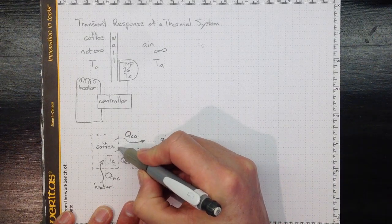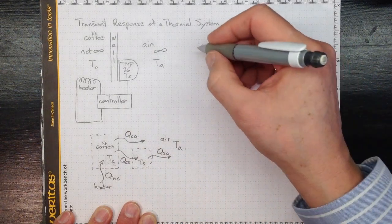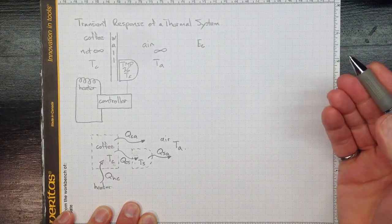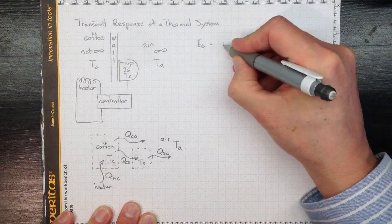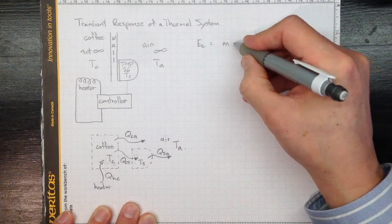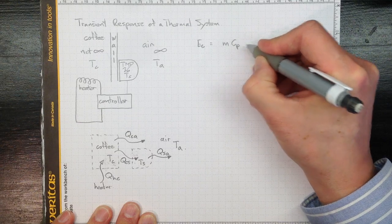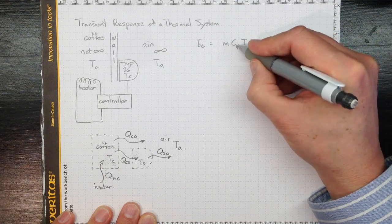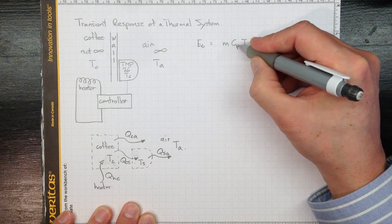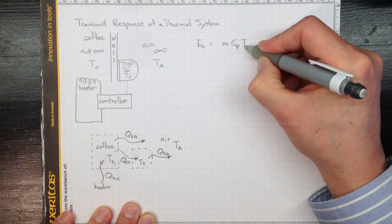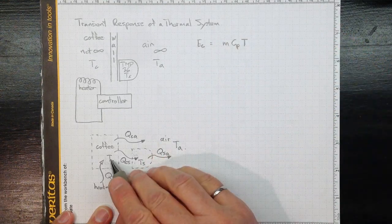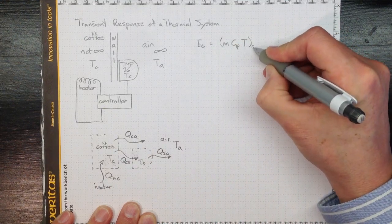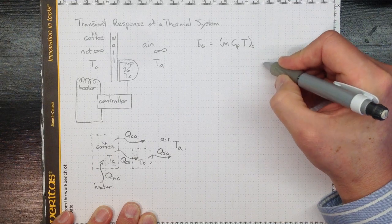So the energy in the coffee will depend on how much coffee there is, so the mass of the coffee and its specific heat and the temperature of the coffee. The more coffee, the larger the specific heat of coffee, which is pretty close to the specific heat of water, or the higher the temperature, the more energy there will be in the coffee, and we better keep track of that by putting a subscript C on all of that to recognize that that's the coffee.